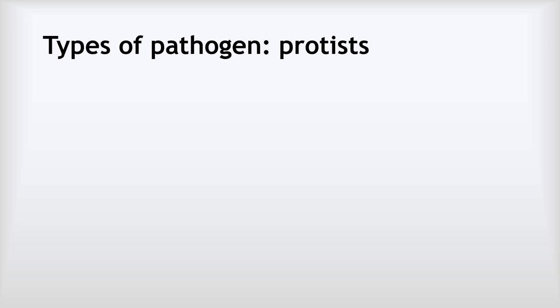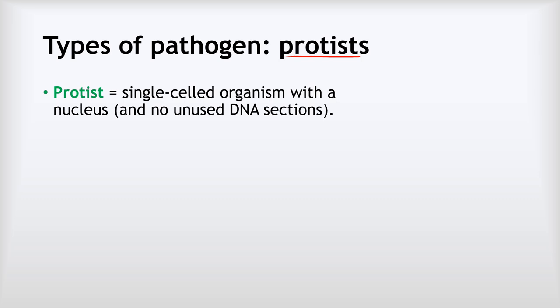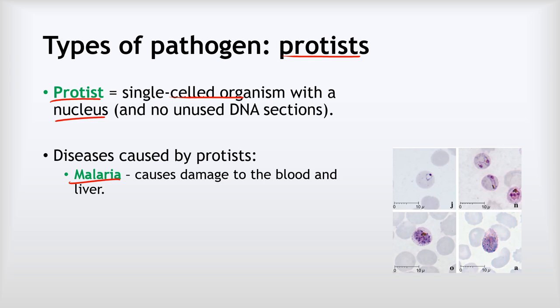Our next kind of pathogen is protists. A protist is a single-celled organism, similar to a bacterium, but with a key difference: they have a nucleus. There is only one disease we need to know caused by protists, and that is malaria. Malaria is a very serious illness that causes damage to the blood and the liver. In the 20th century, somewhere between 150 and 300 million people were killed by malaria; it still kills around 700,000 people every year. The malaria protist grows inside and eventually destroys red blood cells.